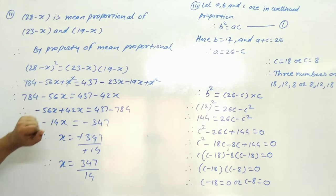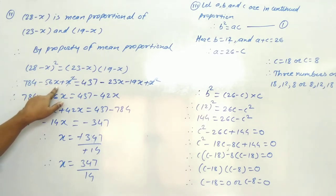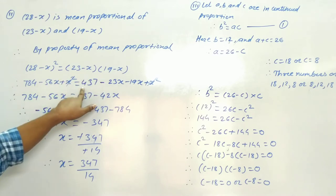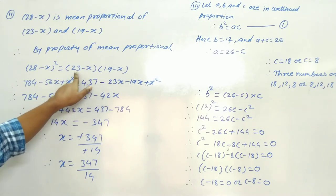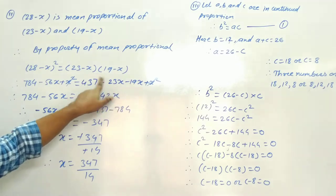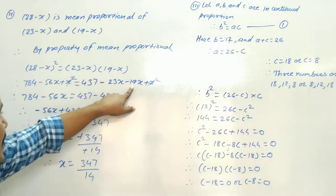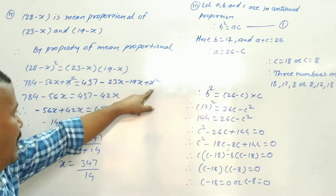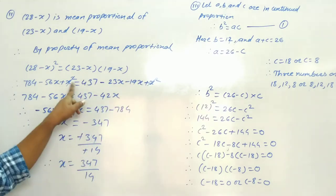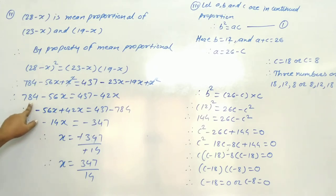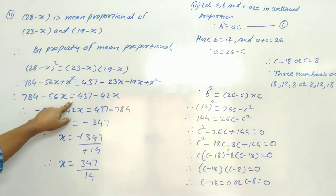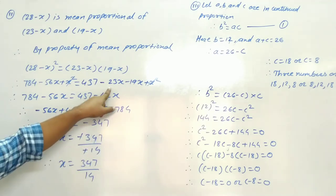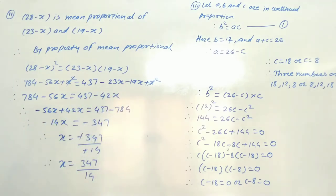Expanding (28 minus x) squared: 784 minus 56x plus x squared is equal to 23 into 19, which is 437, minus 23x minus 19x plus x squared. The x squared terms cancel on both sides, giving 784 minus 56x equals 437 minus 42x.